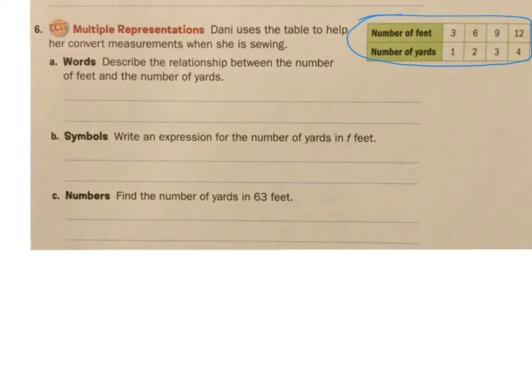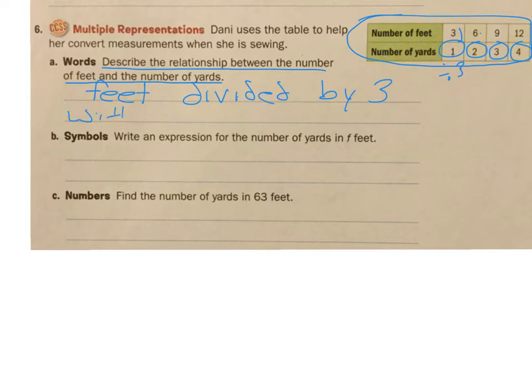If I start with my feet and I want to figure out the relationship, I want to describe the relationship between feet and number of yards. So if I start with my feet, I have three feet, how do I get to my yards? I have to divide by three. Let's see if that works with each one. So three divided by three is one, six divided by three is two, nine divided by three is three, and twelve divided by three is four. So the relationship is feet divided by three will get me how many yards.